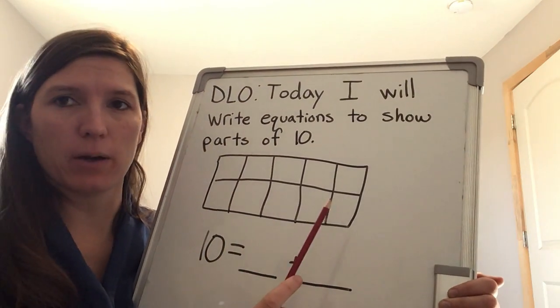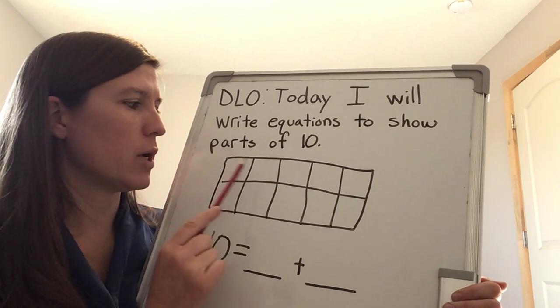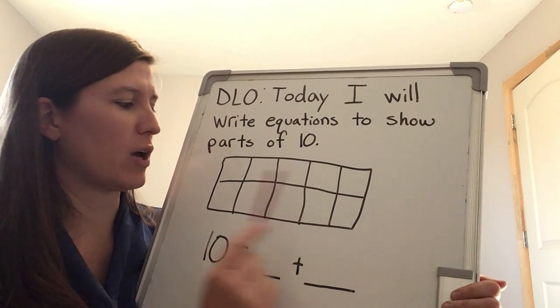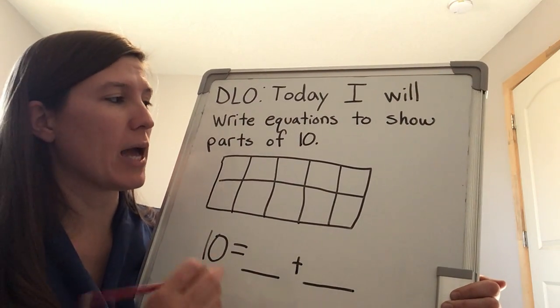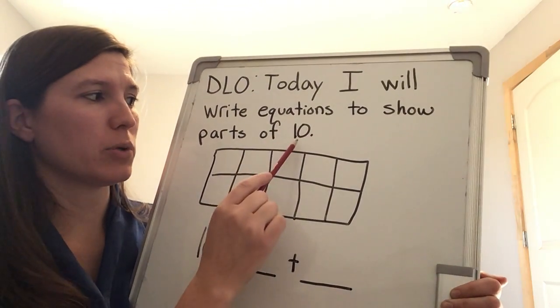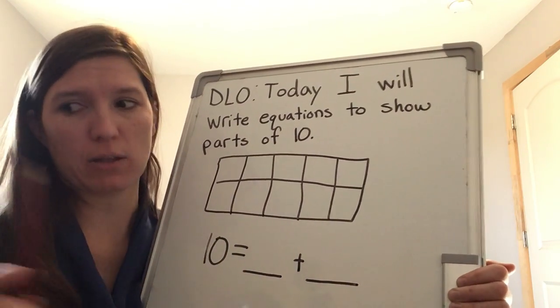I have a 10 frame here. In a 10 frame, how many windows are there? 10. 1, 2, 3, 4, 5, 6, 7, 8, 9, 10. 10 windows in a 10 frame. So I know that when I see the number 10 in a 10 frame, every window is going to be filled up.